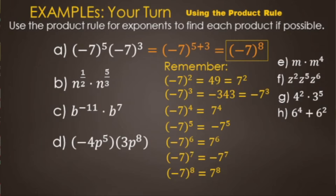For our answer — negative seven to the eighth power — since eight is even, we could write it as positive seven to the eighth power. Either way is fine; both have the same value whether you write it with or without the negative.